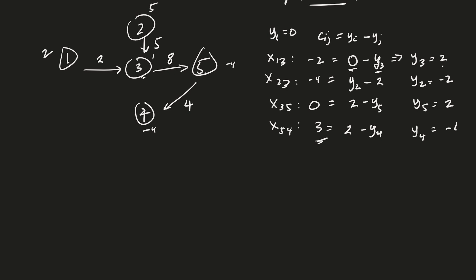All right. So what's last? Last is to check our non-basic variables. And what are the NBVs in this case? X1, 2, X1, 4, X2, 5, and X4, 3. Good. And then we have our Cij minus YI plus YJ. And I will fill in these values and come right back.